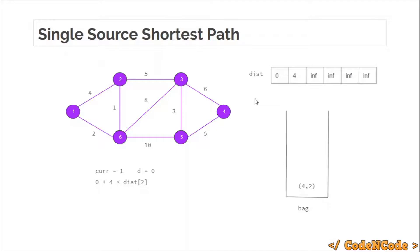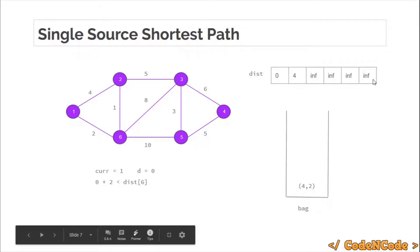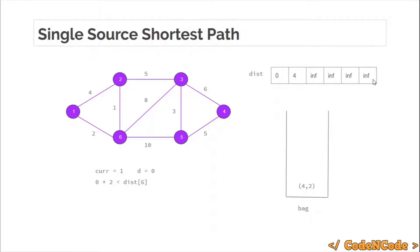Note that in the priority queue version we don't have to use a visited array. Now the next edge from node 1 goes to node 6. Using this edge we try to minimize the distance of node 6. So 0 plus 2 — the weight of this edge — is smaller than the current distance of node 6, which is infinity. So the distance of node 6 is updated to 2, and since the distance is being updated we insert it into the priority queue. Now the work of node 1 is completed.